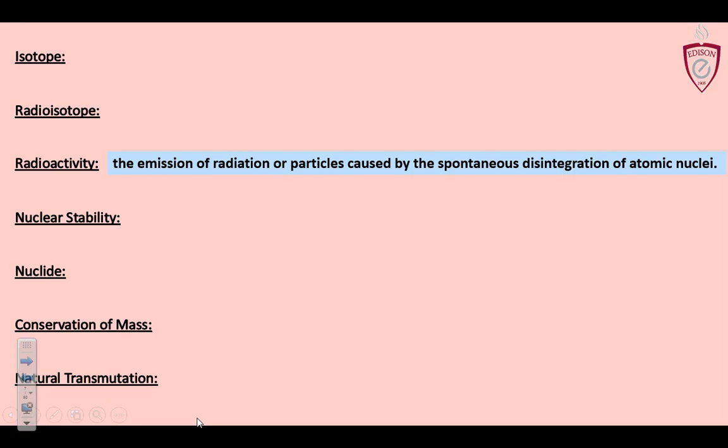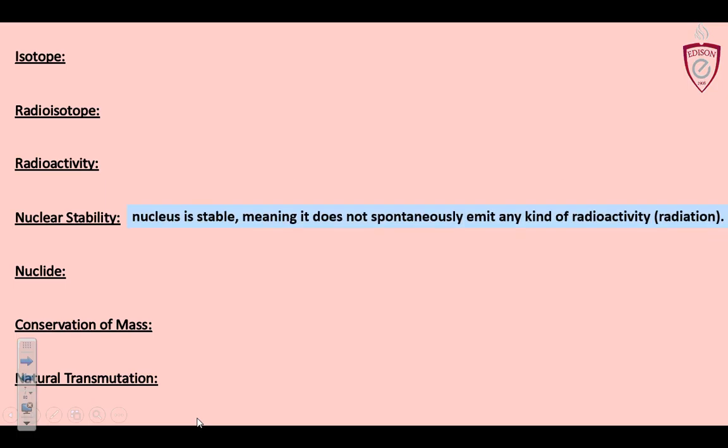Radioactivity. The emission of radiation or particles caused by the spontaneous disintegration of atomic nuclei. Basically, the nucleus is so big it's starting to fall apart. Yeah, unstable. We'll learn after 83 protons, that's just too many pluses. The ratio of protons to neutrons makes unstable elements.